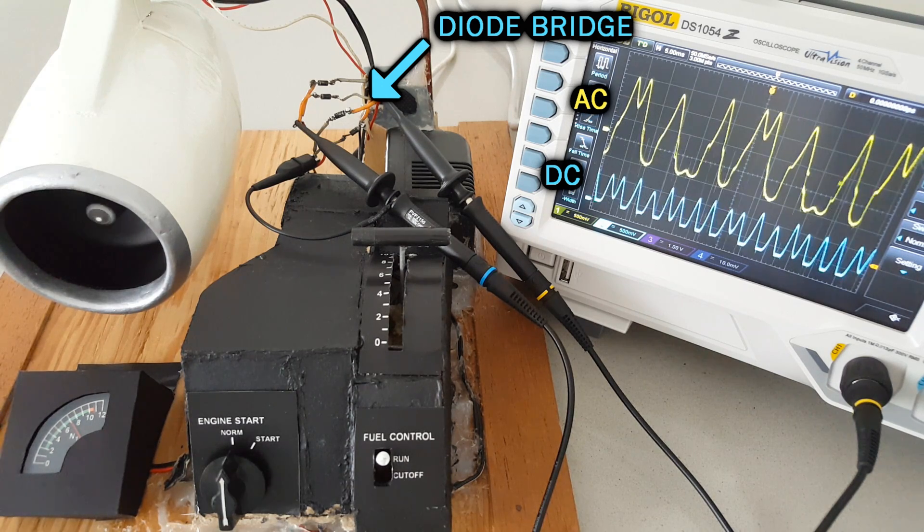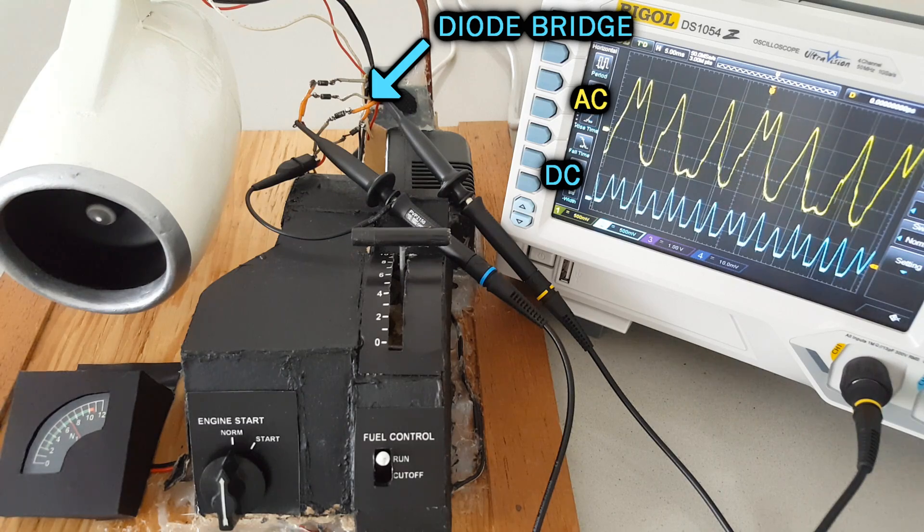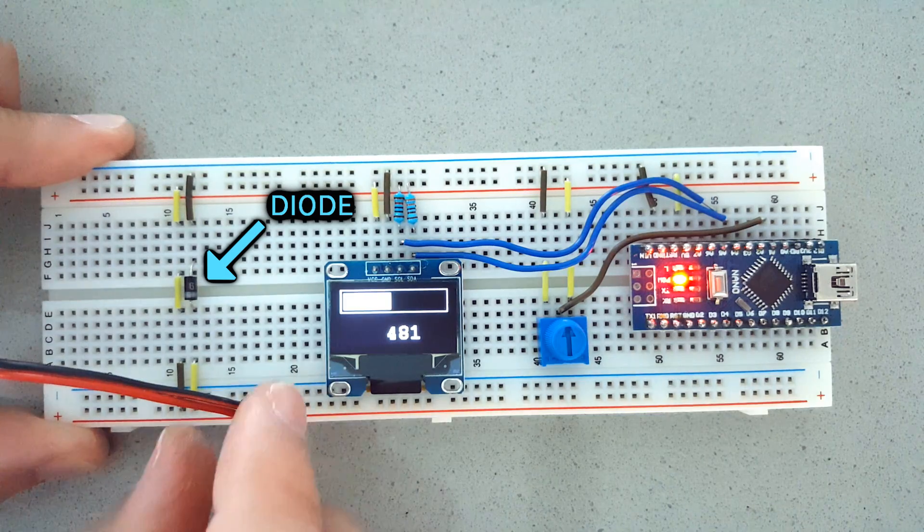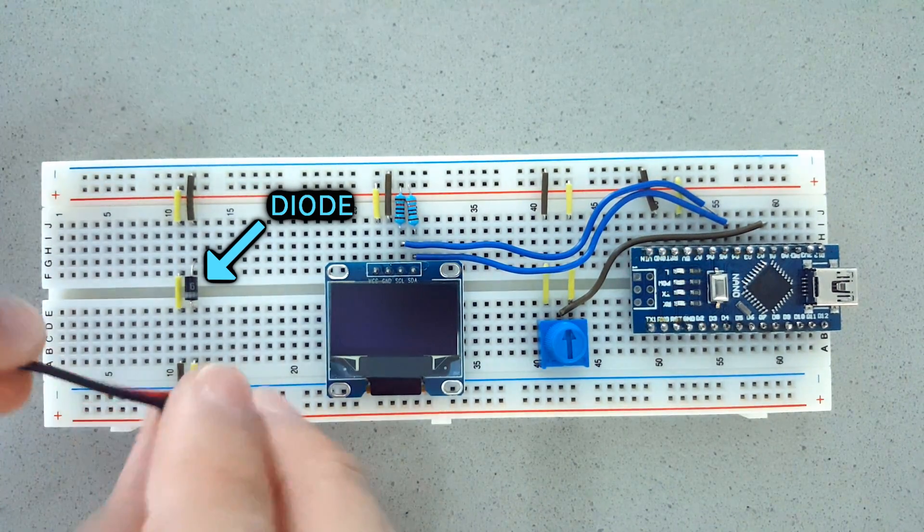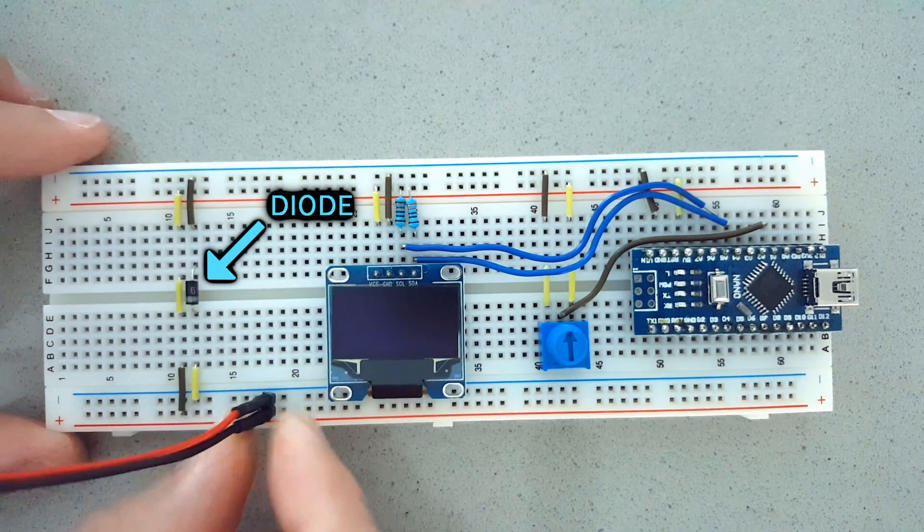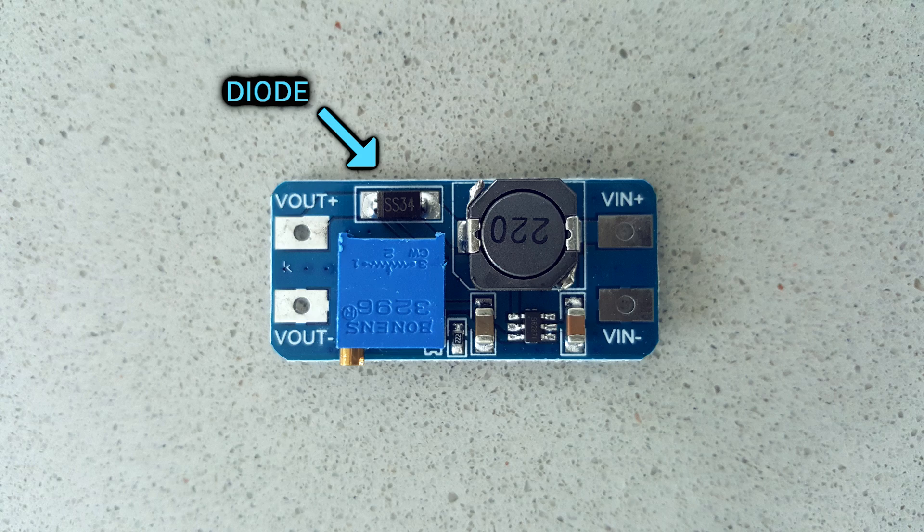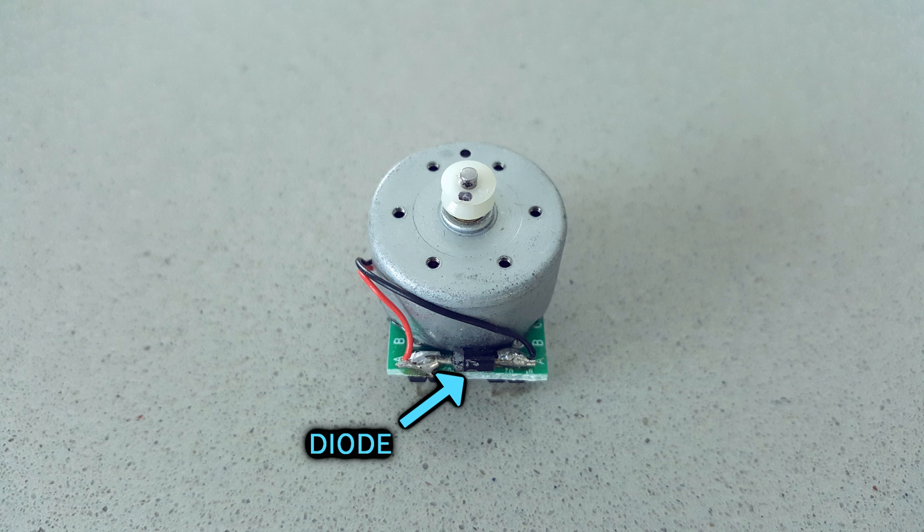It can be used for many things like to convert AC to DC, to protect a circuit from reverse polarity, for boost converters, and so on. Although I personally use it the most to prevent high voltage spikes when using any kind of coil like DC motors, solenoids, relays, etc. I'll talk more about that later on in the video.